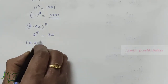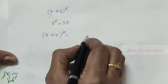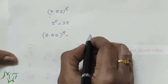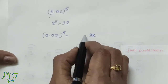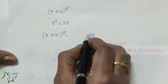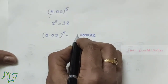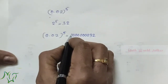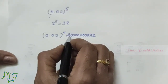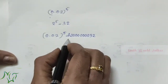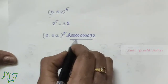0.02 whole raise to 5 equals — we need 10 decimal places. We write 32, which has only 2 digits, so we need 8 more places. We add 8 zeros: one, two, three, four, five, six, seven, eight — then put the point and add a leading zero. The final answer is 0.0000000032.